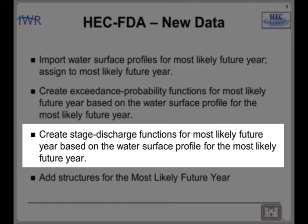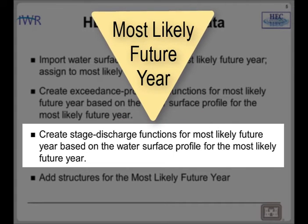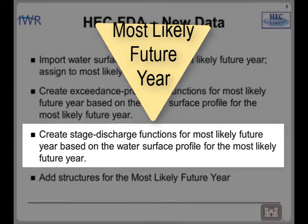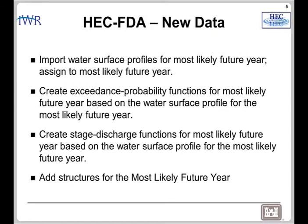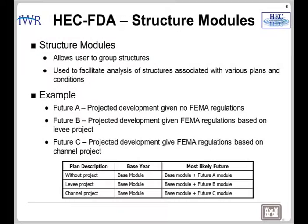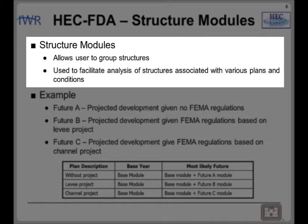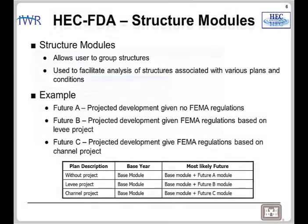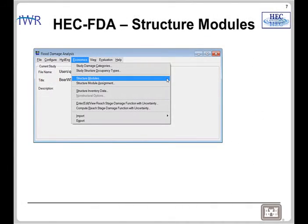This may sound like a broken record, but make sure you have the most likely future year selected. Once you complete those first two big relationships, you will add the structures for the most likely future year. Prior to importing the structure inventory, you will need to create structure modules. The structure modules are a way to group structures, and in Workshop 4 the new structure module we will build will be for the future structures. Let's take a quick look at how you create a structure module in HEC-FDA.